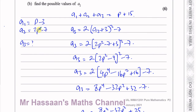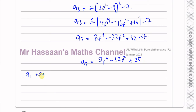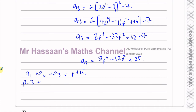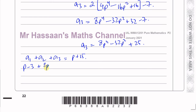So a1 plus a2 plus a3 equals p plus 15. That means (p minus 3) plus (2p squared minus 7) plus (8p⁴ minus 32p squared plus 25) equals p plus 15. Simplifying this looks like it'll be a hidden quadratic with p⁴, p squared, and constant terms.